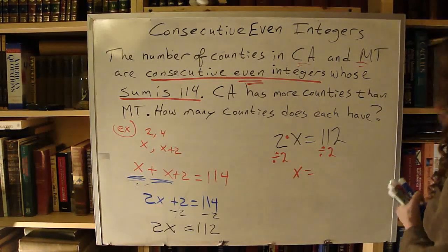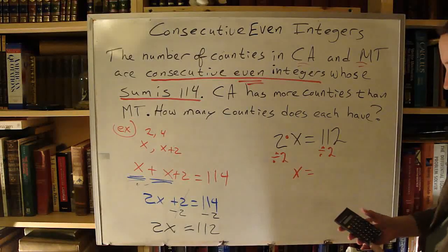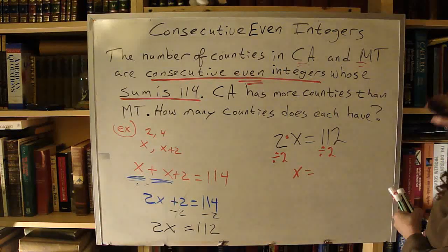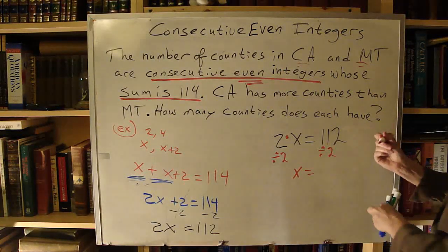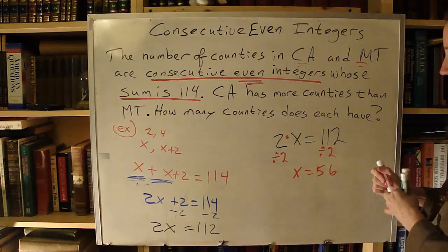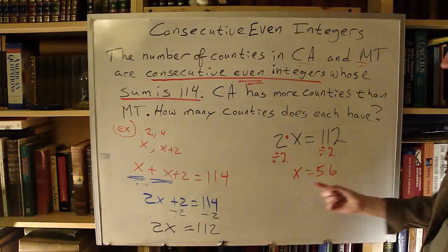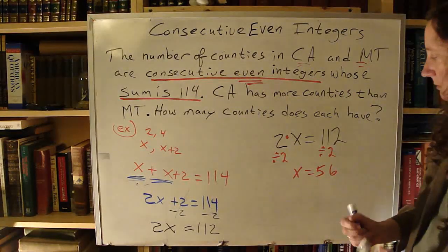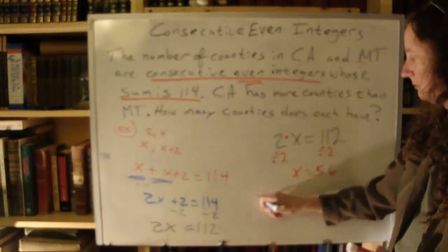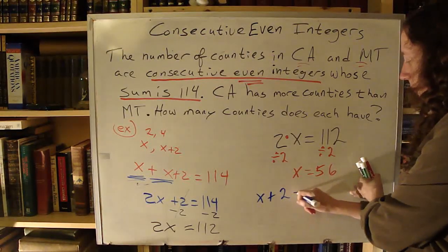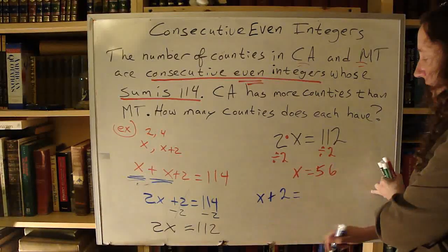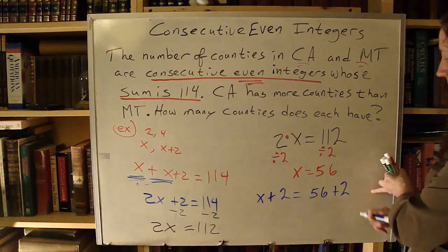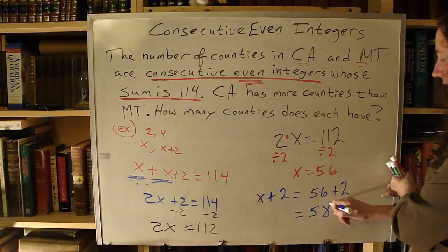Calculator time: 112 divided by 2 equals 56. So now I know that x is 56. My other number is x plus 2 — substituting 56 for x and carrying over the plus 2 gives me 58.